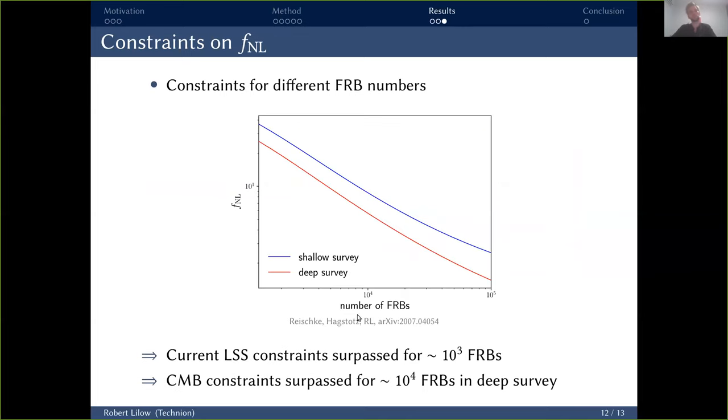And lastly, we also looked at the dependence of these constraints on the number of FRBs, given the two survey depths. For a number of FRBs spanning roughly 1,000 to 100,000, basically the plausible range. And what you can see here is that the current large structure constraints are roughly this order here. So basically already for 1,000 FRBs, both types of surveys would surpass these results, whereas the current CMB constraints are approximately here, and for the deep survey will be surpassed by order of 10^4 FRBs. And anything beyond that, which is perfectly plausible within the upcoming decade, will get us even closer to a constraint of the order of one.